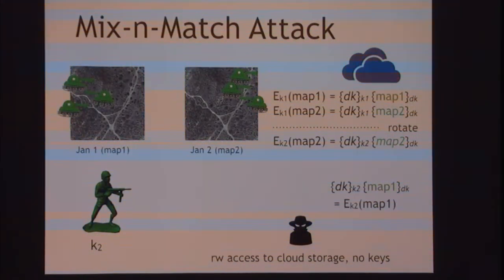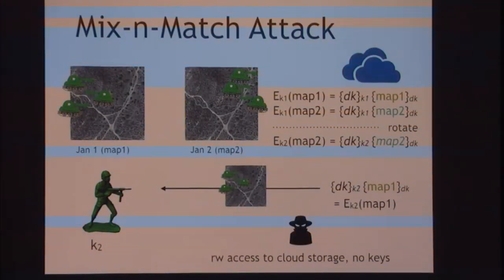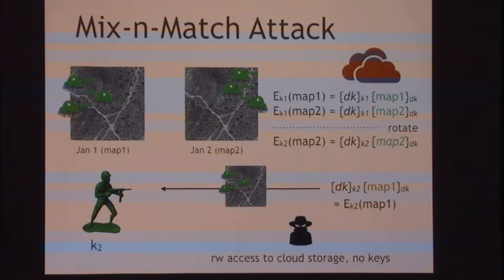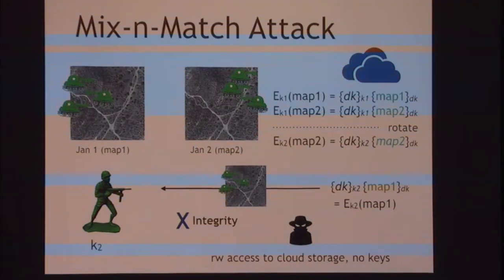Now Sarge is going to access the cloud to figure out which image is correct, but our attacker has read-write access and has seen all versions of the file. The attacker constructs a forgery: he takes the header from the most recent version of the file and the body from the oldest version of the file, and pieces them together. This is actually a valid encryption of an old version of the file under the new key. Sarge downloads this file — it's the wrong image but it decrypts fine. He has the second key, decrypts the header, recovers the data key, uses it to decrypt the old body, and thinks this is the latest version. This is a big failure — the attacker can generate a forgery, rolling back file state to a state never encrypted under this key. Authenticated encryption is not supposed to allow this.